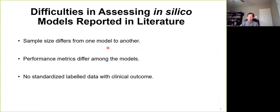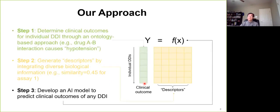First one, sample size differs from one model to another. Some people use conventional machine learning, others may use deep learning, and the performance metrics differ among the models. More importantly, no standardized labeled data with clinical outcome to describe the drug-drug interaction.